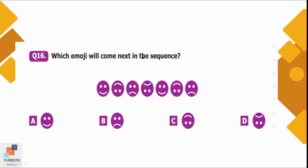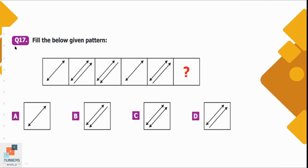Question number 16: Which emoji will come next in the sequence? Following the sequence correctly, option D is the suitable emoji to complete the sequence. Question number 17: Fill the below given pattern. Looking at the pattern carefully, the shape in the third box will be repeated in the sixth box. Option B is the correct option.